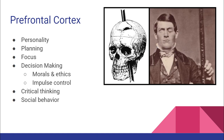The prefrontal cortex handles planning, personality, problem-solving, focus, decision-making, morals, ethics, and impulse control — the ability to delay rewards. Animals can't really do this: if you put food in front of a pet all day it'll keep eating, never thinking 'I shouldn't.' So impulse control is fundamentally a prefrontal function, along with social behaviors and interaction with other humans.